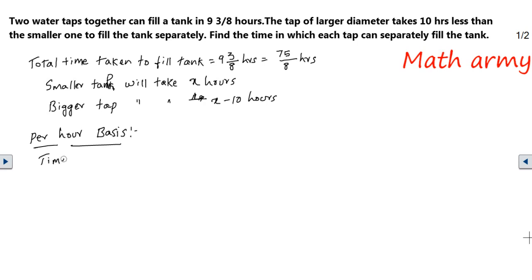Time taken to fill the tank on an hourly basis is going to be 1 divided by 75 by 8, and 8 goes to the numerator, so the new fraction would be 8 divided by 75. Now if I have taken for the total tank, what happens for one tap, smaller tap? It is going to take 1 by X hours.